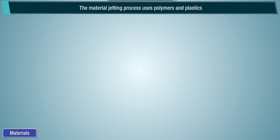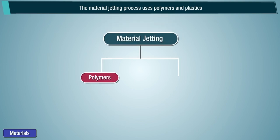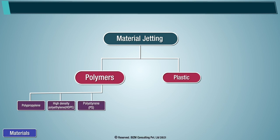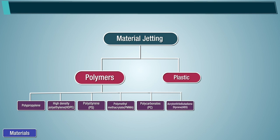The material jetting process uses polymers and plastics. Polymers such as polypropylene, high density polyethylene, polystyrene, polymethyl methacrylate, polycarbonates, acrylonitrile butadiene styrene, high impact polystyrene, electrochemically degradable polymers.